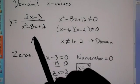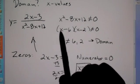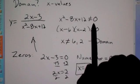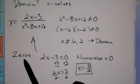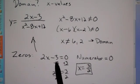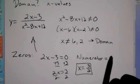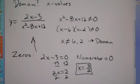So to recap: for domain, set your denominator not equal to 0. For zeros, set your numerator equal to 0. That's how we find domain and zeros.